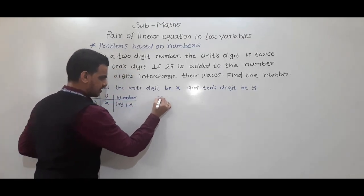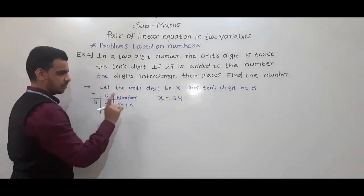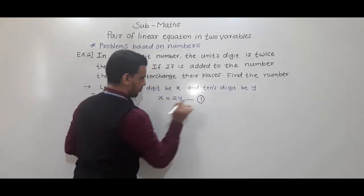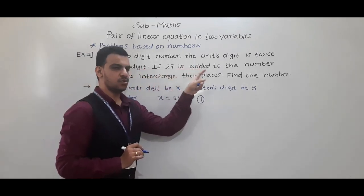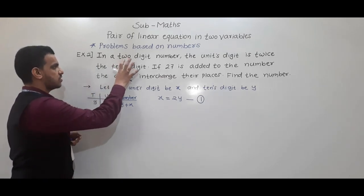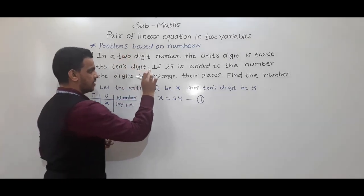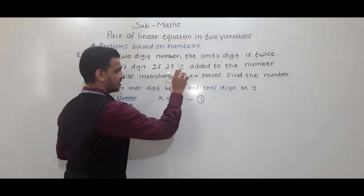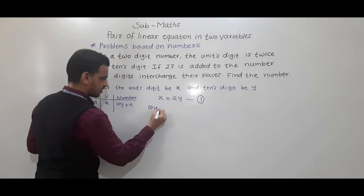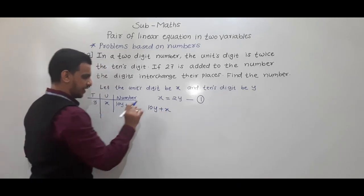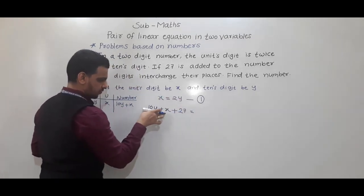From the first condition: the units digit is twice the tens digit. Units digit is x and tens digit is y, so x equals 2y. This is equation 1. For the second condition: if 27 is added to the number, where the original number is 10y plus x.